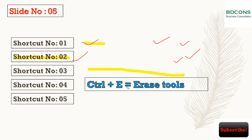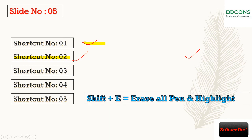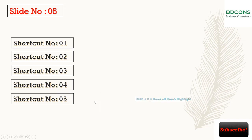Shortcut 4 and 5: Eraser tools. Press Ctrl+E to get the eraser tools. If you need to erase your highlights or any pen drawing activities, just click on that area and it will erase. To remove the eraser tool, press Ctrl+E again. To erase all pen and highlight activities at once, press Shift+E.